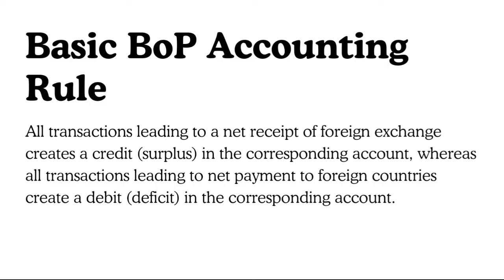Current account deficit in any country is necessarily offset by capital account surplus — that is usually how it happens. BOP accounting follows the system of double entry bookkeeping. According to this system, BOP should always balance in principle, where the total value of credit records equals the total value of debit records. But this does not happen in practice due to unavailability of properly recorded data. Therefore, a record for errors and omissions is also included to make the overall Balance of Payments zero.